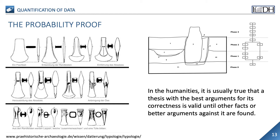The basis of statistics is therefore probability. What we consider probable is based on our experience. In this respect, we are constantly unconsciously collecting data in our everyday world and evaluating it inductively — the jam sandwich always falls with the bottom side to the floor, or the train to Göttingen is usually 10 minutes late. A statistical analysis can now help us verify these prejudices. In the humanities, it is usually true that a thesis with the best arguments for its correctness is valid until other facts or better arguments against it are found. Historical dating therefore claims the highest possible probability, but is not proof in the mathematical sense — they can rather be called proofs of probability.